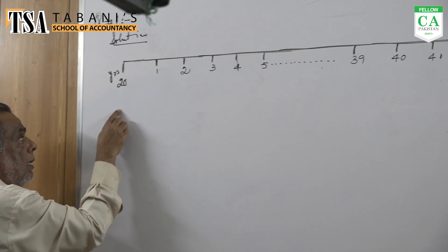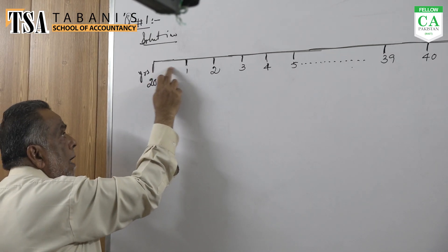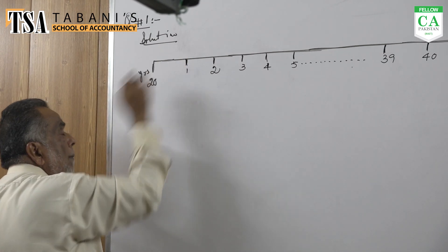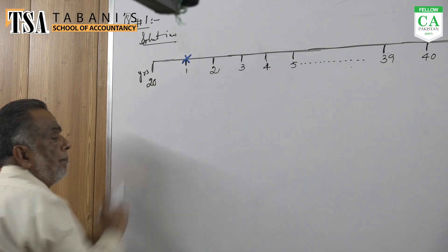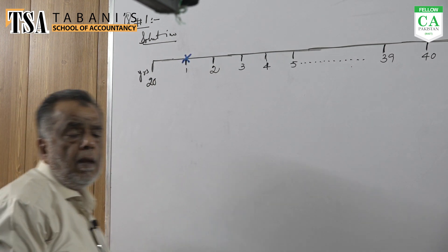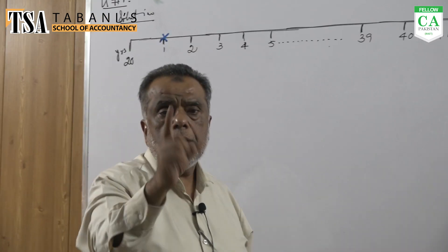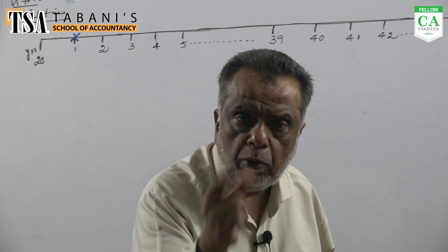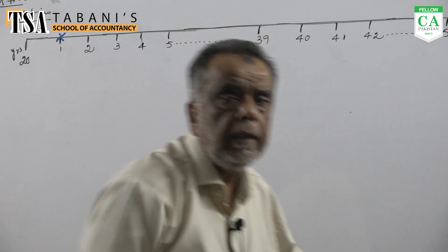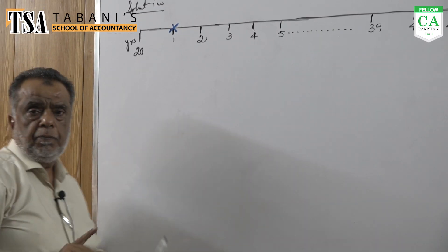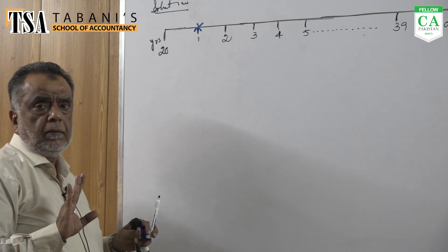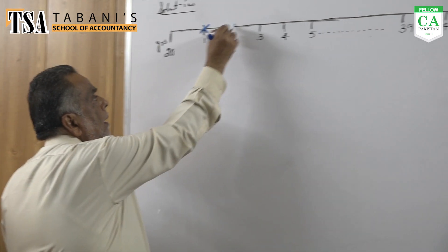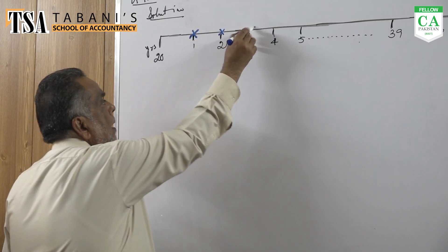Mr. Ahmed is 20 years old. At 21 he has his first payment. This means both phases are ordinary annuity — both saving and withdrawal phases are ordinary annuity.